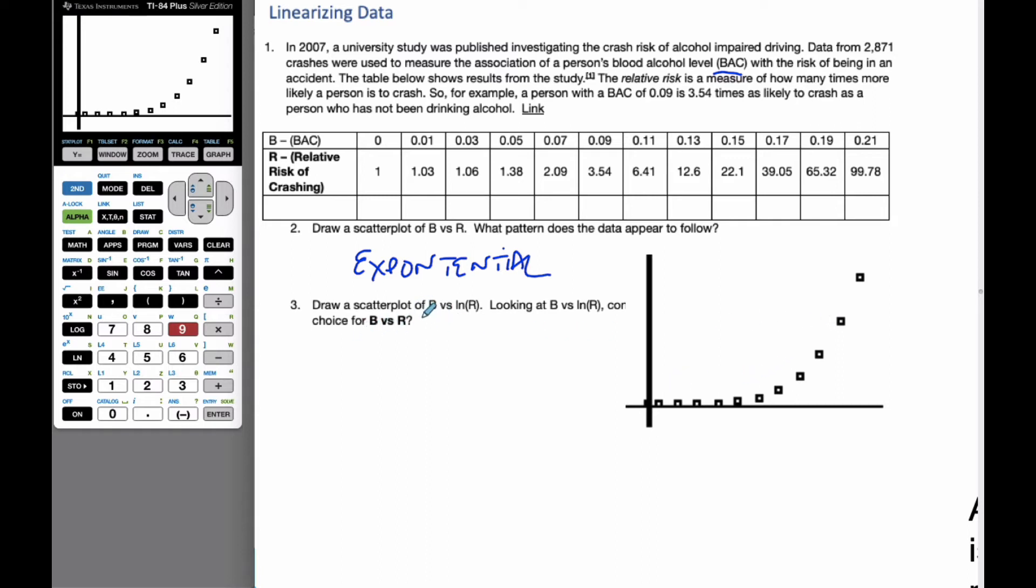Now it says to draw a scatterplot of B versus the natural logarithm of R. So if I go over to statistics, I'm going to edit my values. I'm going to make a new column here in L3. I'm going to go on top of L3, and I'm going to go the natural logarithm of all the L2 values. And so L3 is going to consist of the natural logarithm of L2. I hit enter, and it populates, it does all the calculations. And if I make this scatterplot, I'm going to change it to L3. Zoom to number 9, which is statistics. And here you can see with the exception of this first little bit, it's almost a perfectly straight line. It looks like this is definitely an exponential type model. And so here is the natural logarithm scenario. This is ln(R) versus B, and this is just R versus B.